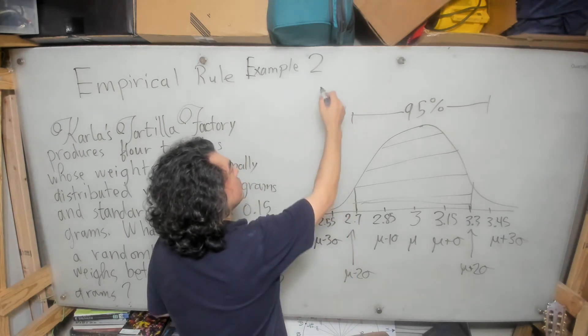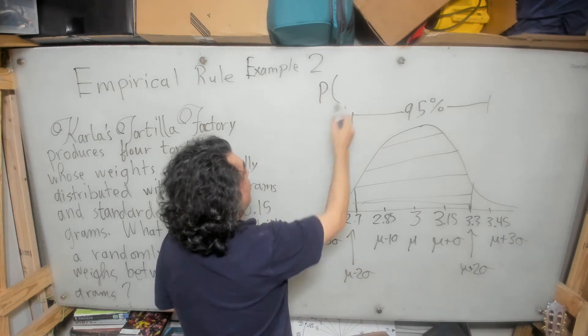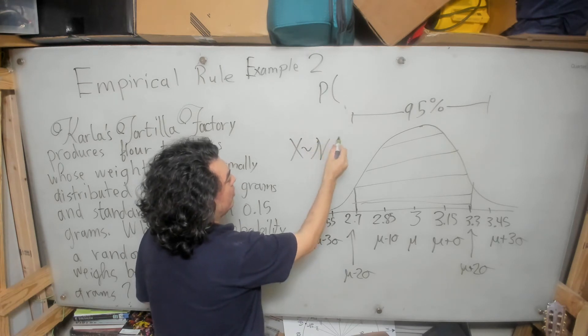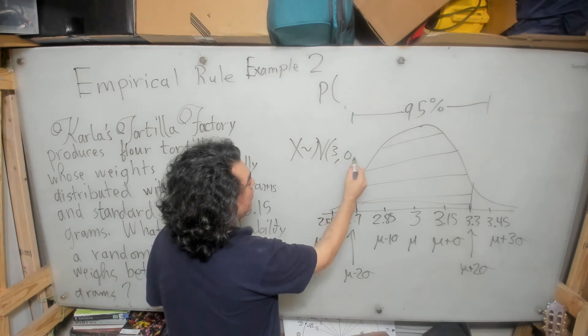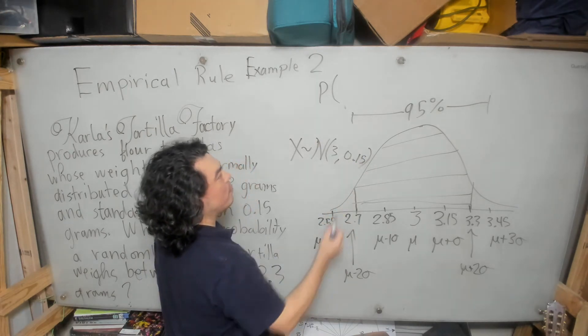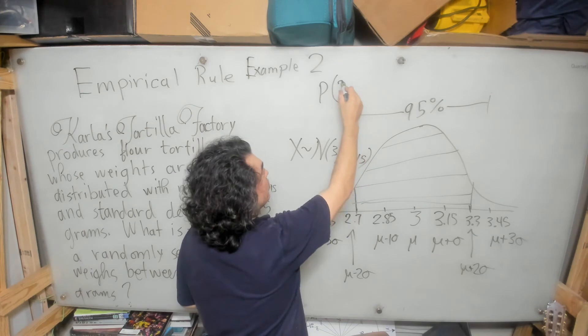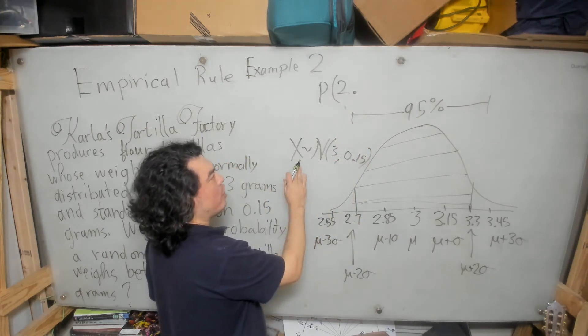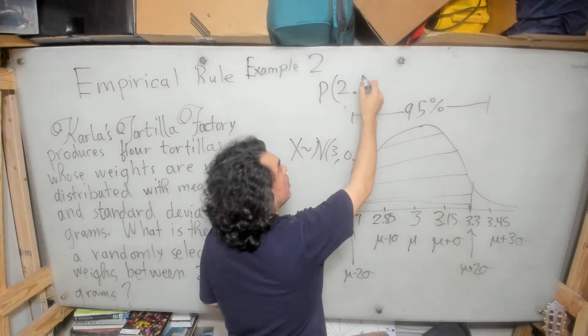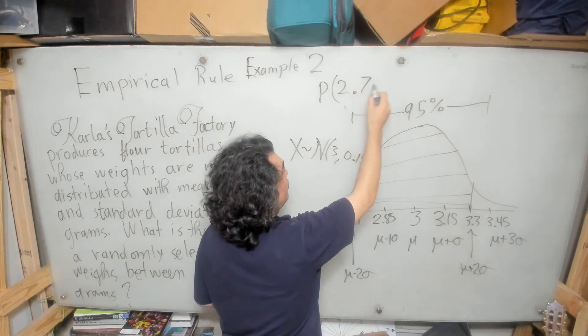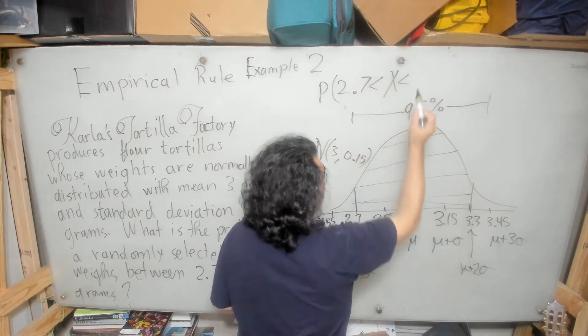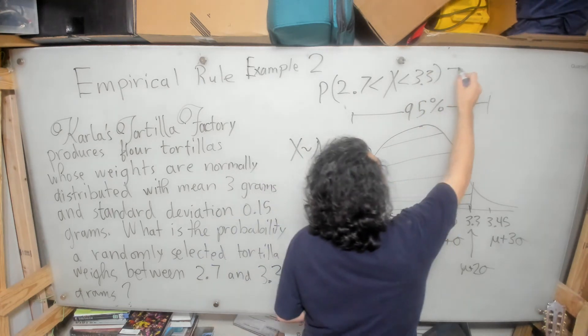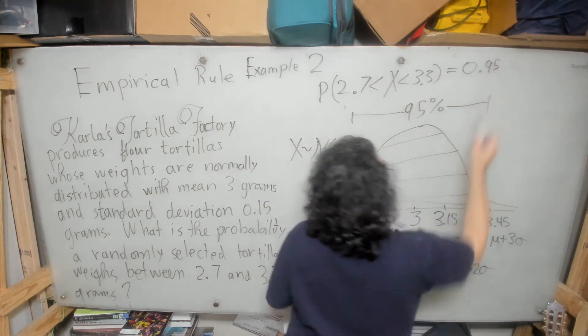So the probability, and again here, let's pretend that this distribution is X where X is normally distributed with mean 3 standard deviation 0.15 as stated in the problem. So the question was, the question can be restated as what is the probability that the normal random variable here, which corresponds to the tortilla weight, is between 2.7 and 3.3. That probability from the empirical rule is 0.95.